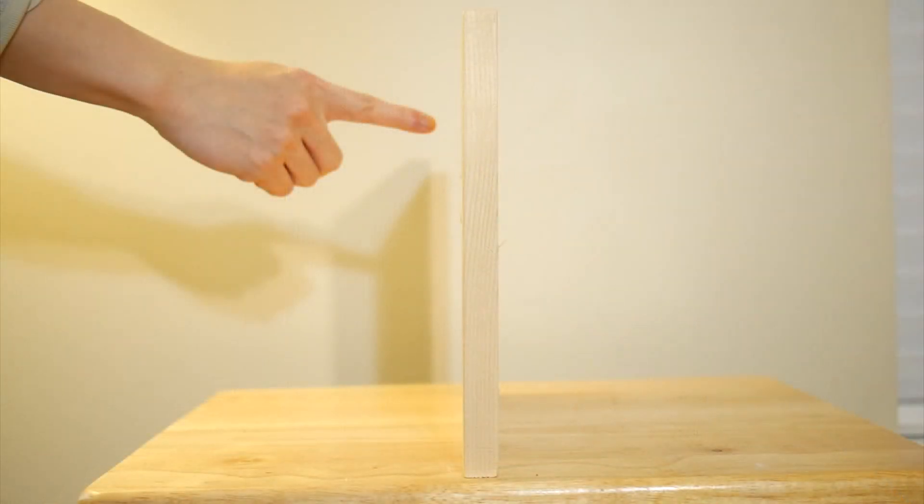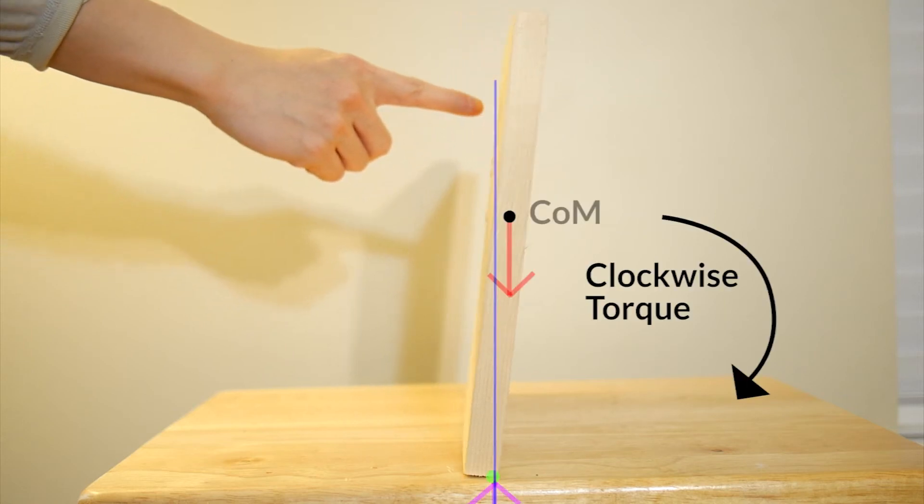However, if you look at it from the side, it's a different story. Since the thickness of the wood is narrow, even slight push can shift the center of mass to outside between these two pivot points. And this results in the torque that makes it continuously rotate until it hits the ground.